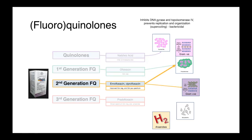Our second-generation fluoroquinolones — commonly used products like enrofloxacin and ciprofloxacin — have improved anti-gram negative activity and start to have some anti-gram positive spectrum as well, making them much broader spectrum agents than our earlier generations.